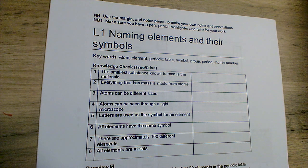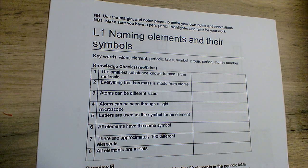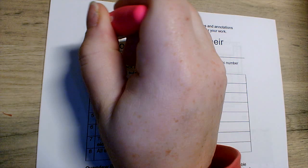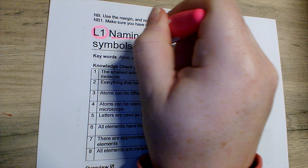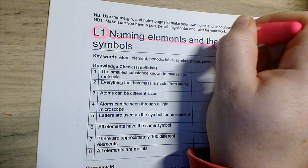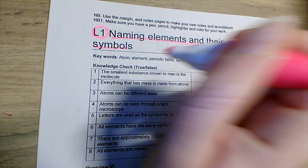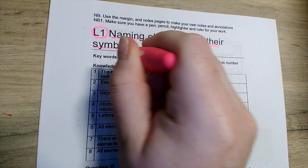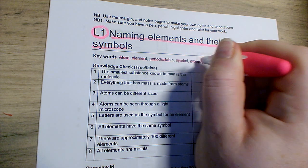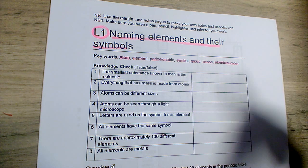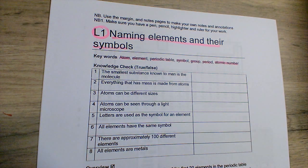Hi everyone, welcome to the first lesson of matter: naming elements and their symbols. Keywords include atom, element, periodic table, symbol, group, period, and atomic number, which will all make sense to you by the end of this video.